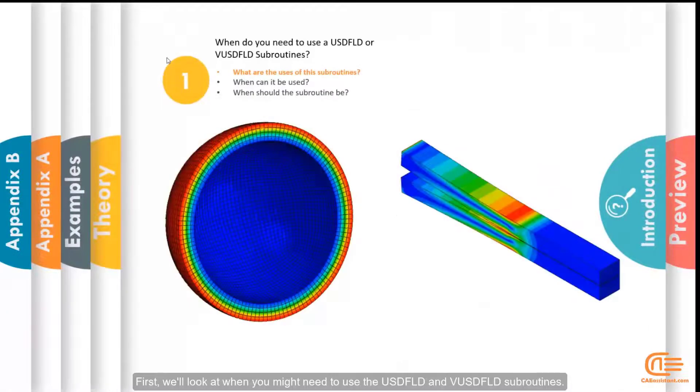First, we'll look at when you might need to use the USDFLD and VUSDFLD subroutines. You can use these subroutines when you need to make adjustments to the material.